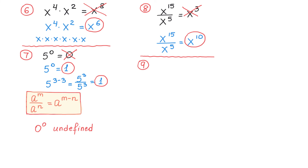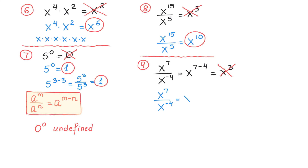In the next example, we divide x to the seventh power by x to negative 4. Thinking this is x to the power of 7 minus 4, giving x to the third power, would be incorrect. Instead, we apply the quotient rule and subtract the exponents: 7 minus negative 4. Because one exponent is 7 and the other is negative 4, we write 7 minus negative 4, which equals 11, giving x to the eleventh power.